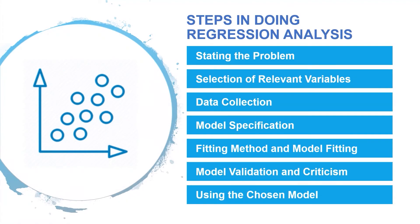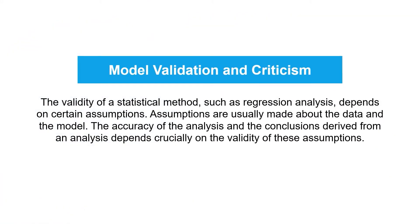The sixth step is model criticism and selection. The validity of a statistical method such as regression analysis depends on certain assumptions. Assumptions are usually made about the data and the model. The accuracy of the analysis and the conclusions derived from an analysis depends crucially on the validity of these assumptions. Before using regression equations for any purpose, we first need to determine whether the specified assumptions hold. We need to address the following questions: What are the required assumptions? For each of the assumptions, how do we determine whether or not the assumption is valid? And what can be done in cases where one or more of the assumptions does not hold? The standard regression assumptions will be discussed in another video.